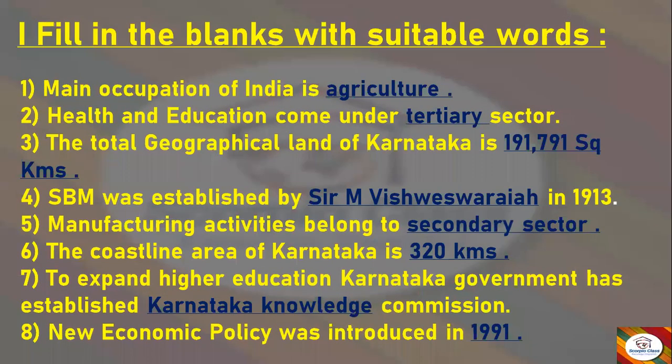Our first main section is Fill in the Blanks with suitable words. First: the main occupation of India is — answer is Agriculture. Next: health and education come under — answer is Tertiary sector. Next: the total geographical land of Karnataka is — answer is 1,91,791 square kilometers.